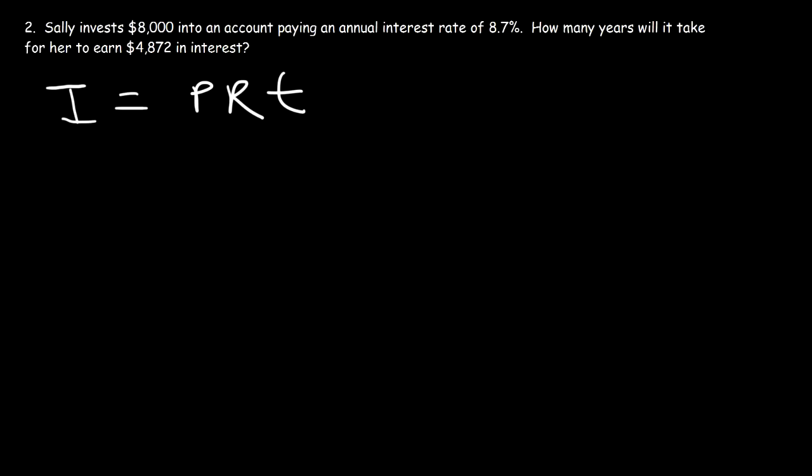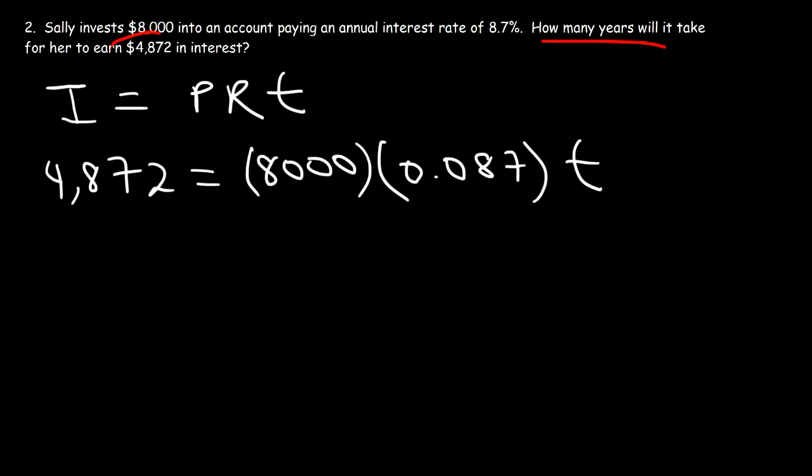So the interest that she earned in these years is $4,872. The principal, the amount that she puts in the account, is $8,000. R is the interest rate. So if we take 8.7 and divide it by 100, R is 0.087. That's the decimal equivalent of 8.7%. Our goal is to find T. We need to find the value of T in this problem, because we're looking for how many years it's going to take her to earn this level of interest.